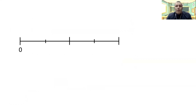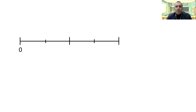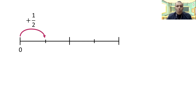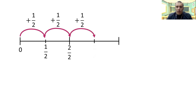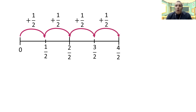Looking at our fractions today, I've got a number line here. I've got zero at the left-hand side, a big thick line in the middle, and a smaller line to the left and the right of it. So we're going to be working in halves for this. We need to think about how many halves I have on my number line: one half, two halves, three halves, and four halves. So I've worked out how many halves I've got — I've got four of them.